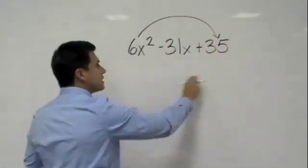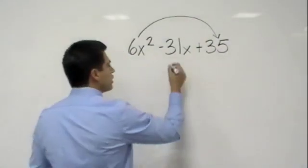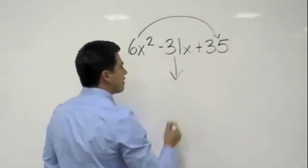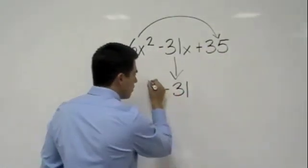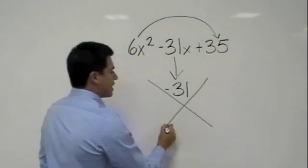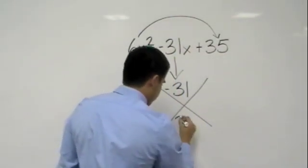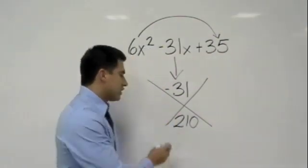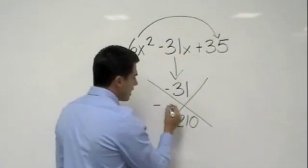We'll multiply 6 times 35, and they're both positive, so that would be a positive 210. We bring down this negative 31, so there's a negative 31, and we use our x. Then we put whatever multiplies to 6 times 35 right here, which is a positive 210. Now, if this is a positive and it adds to a negative, then we know that both signs are negative.